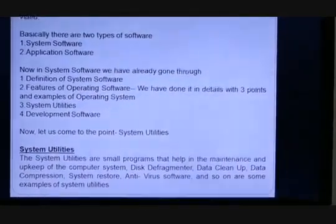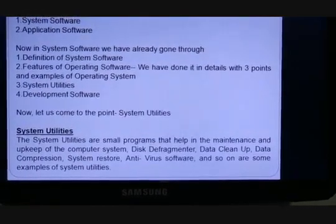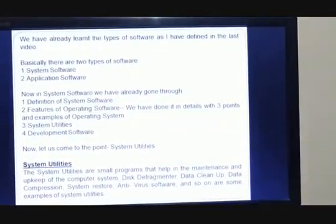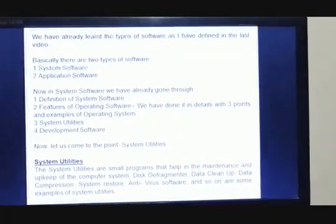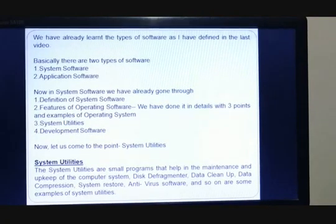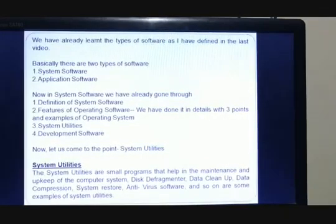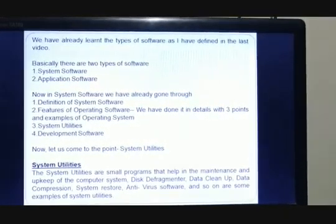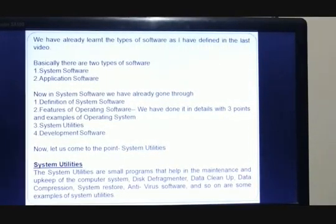Basically, system software specially provides a platform for other software to work properly. We have already gone through the definition of system software, features of operating system in detail with three points, and examples of operating system. Now I want to elaborate on some of the terms of system utilities.